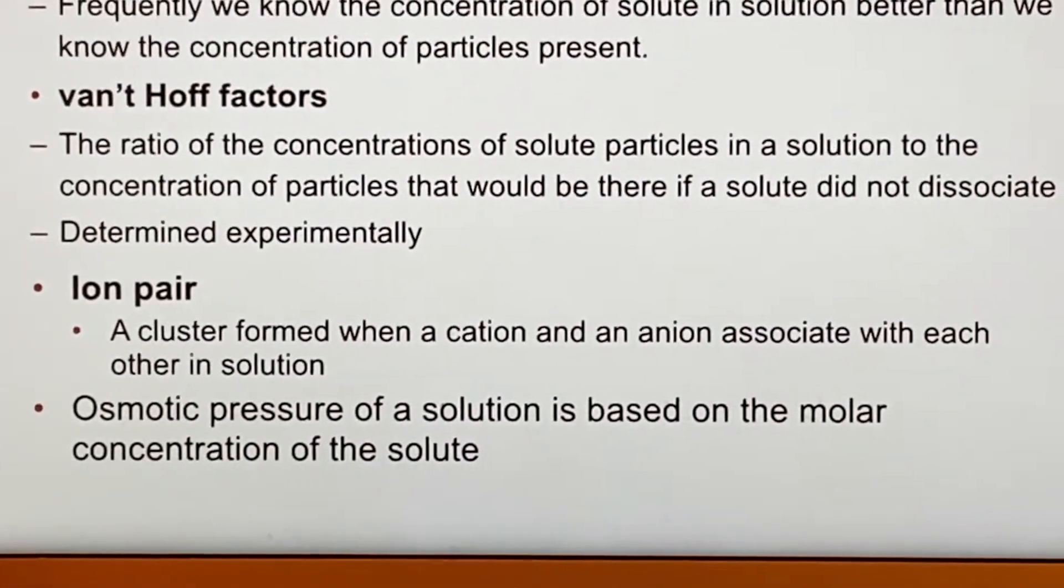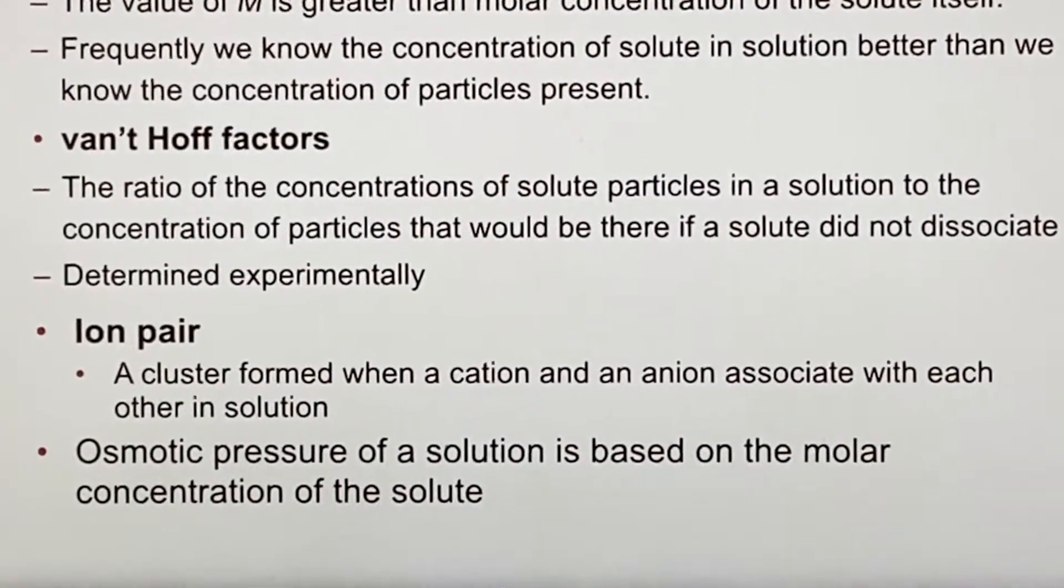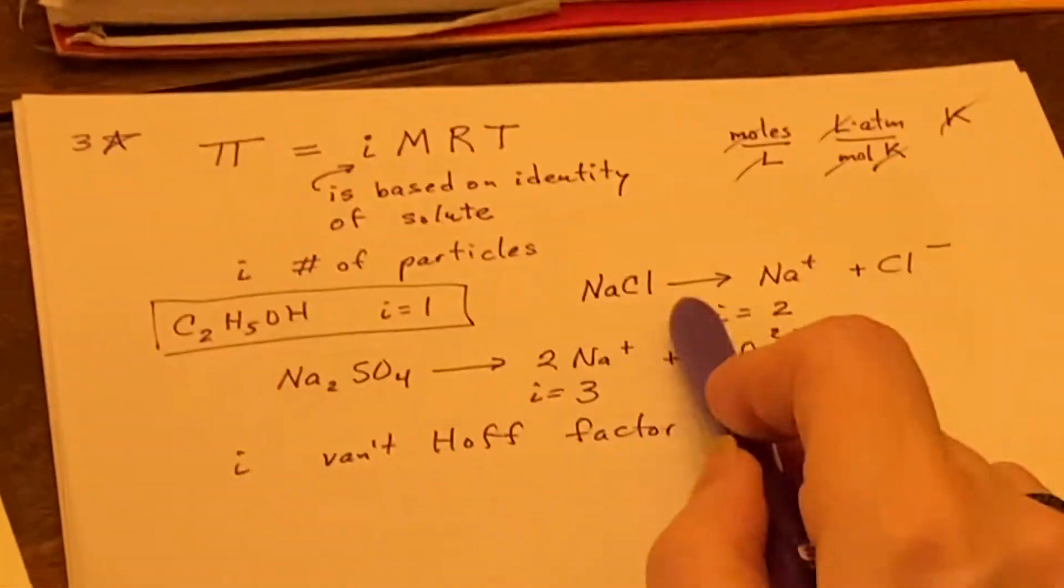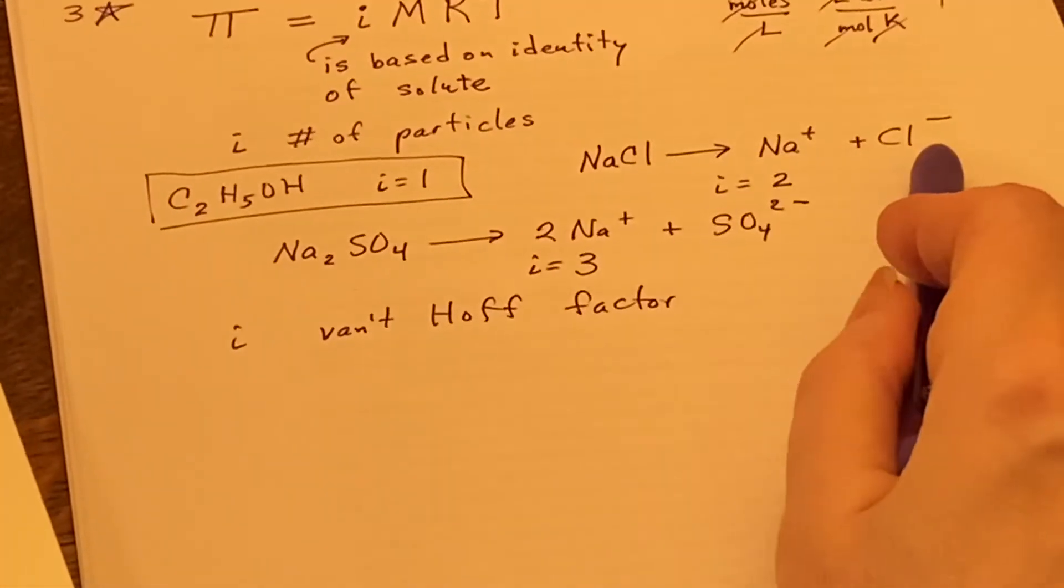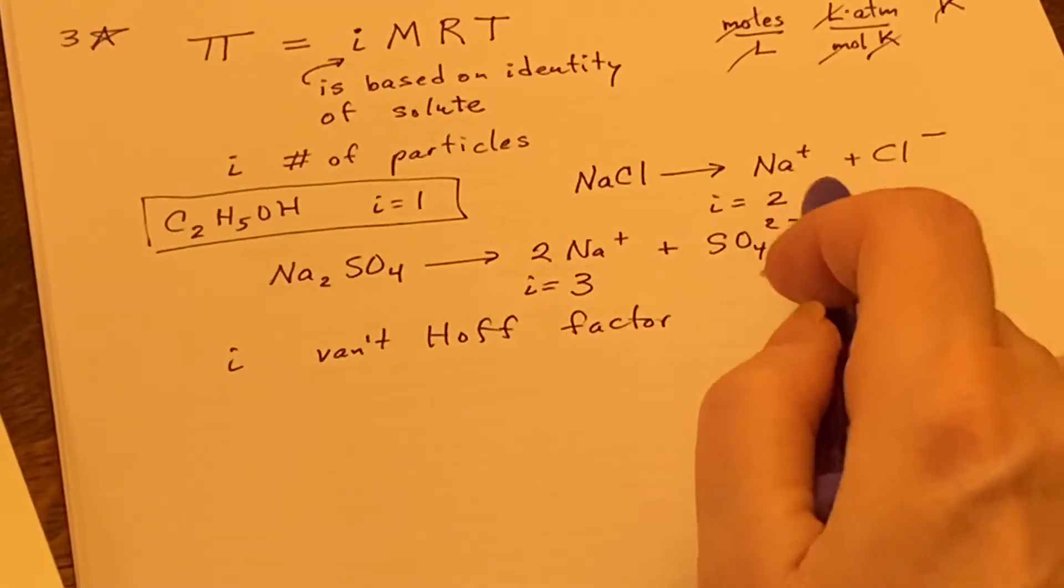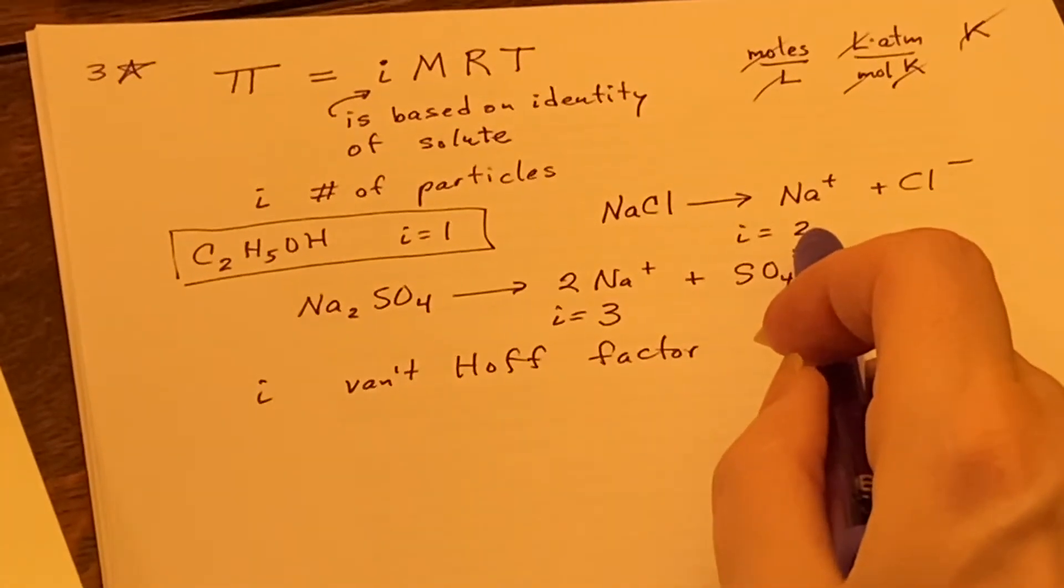So it turns out that when we have van't Hoff factors involved, they are actually determined experimentally, instead of you just saying, oh, I believe it's going to happen like this. This is a pretty good first guess, but it won't hold up if you actually go and do the experiment. You'll get a number that isn't quite as large as two.